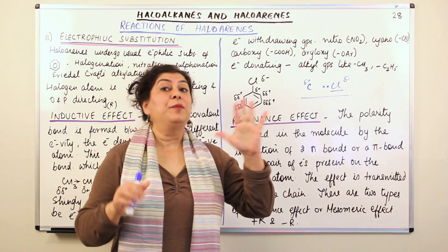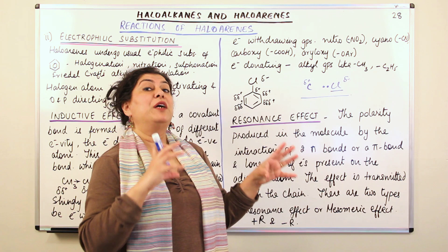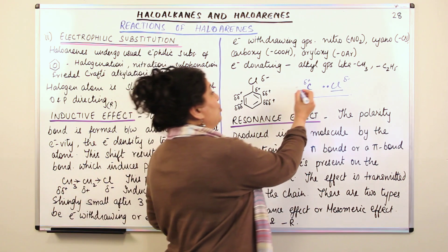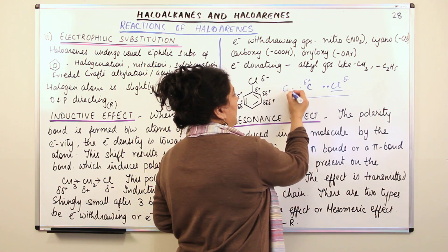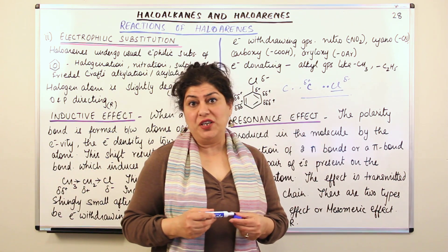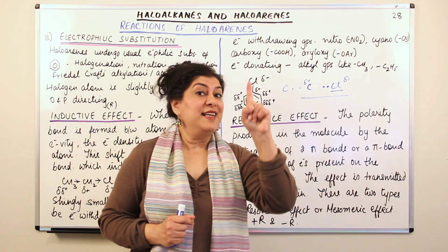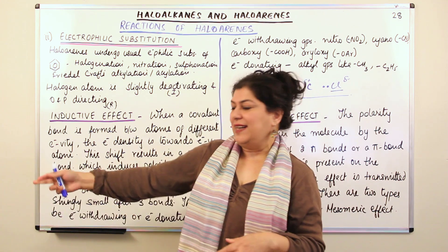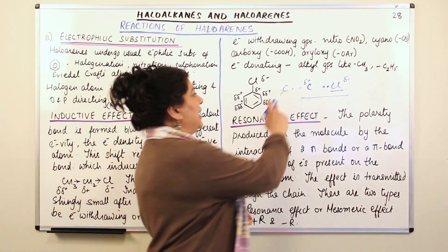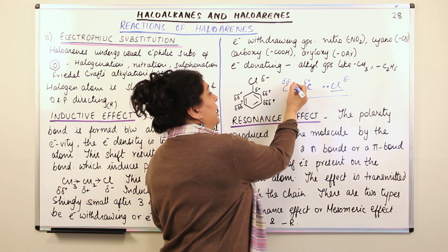The polarity is such that the more electronegative atom becomes partially negative and the more electropositive atom becomes partially positive. The moment this carbon becomes partially positive, it becomes deficient in electrons. So it starts pulling from the next carbon in the molecule. But carbon is not as electronegative as chlorine, so it cannot pull that electron very strongly. As a result, the second carbon also acquires a partial positive charge, but the positive charge is even lesser than that of the first carbon.